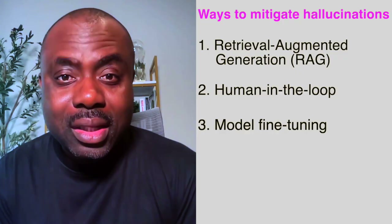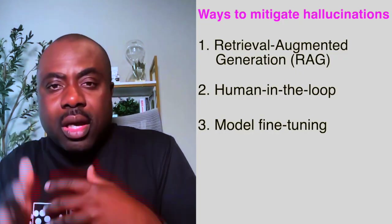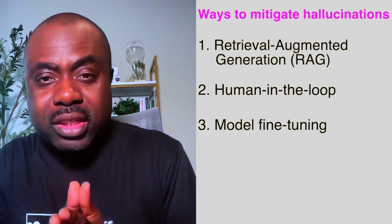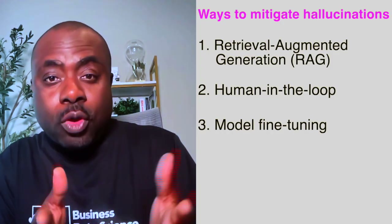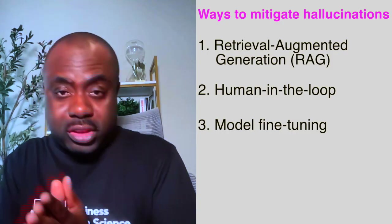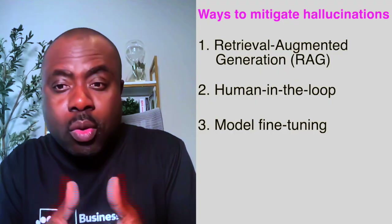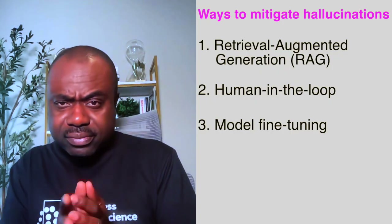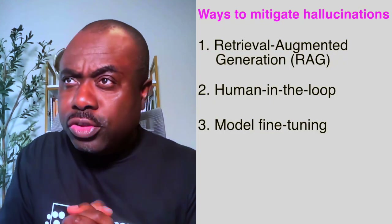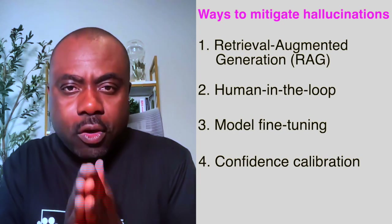Human-in-the-Loop is the second way to try to mitigate hallucinations. The third one is model fine-tuning — you can align your LLM with domain-specific truths or sources so that over time it becomes good in that domain. For example, if this model is supposed to answer questions about fraud, you fine-tune it on fraud concepts. If it's about legal matters, you fine-tune it to know more about legal matters.